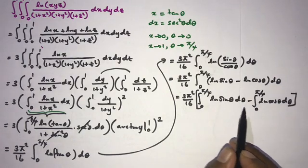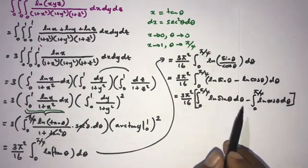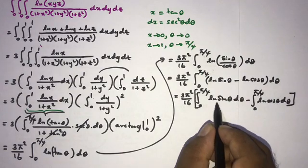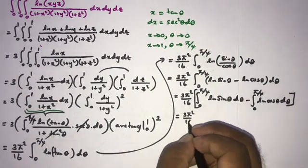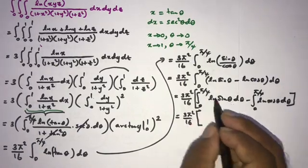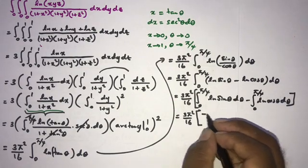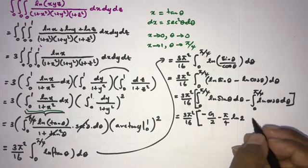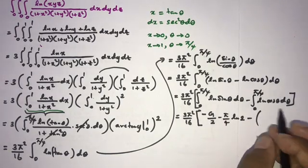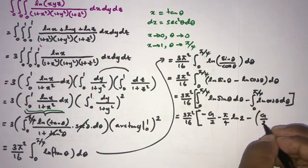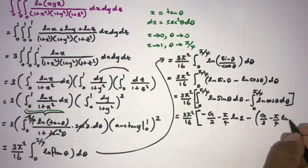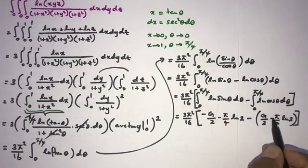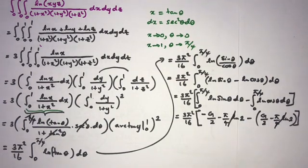These are familiar integrals discussed in a previous video — I will add the link in the description. The result is: 3(π²/16) times {[−G/2 − (π/4)ln(2)] − [−(π/4)ln(2)]}. The −(π/4)ln(2) terms cancel, leaving −G/2 − (−G/2), which gives −G.